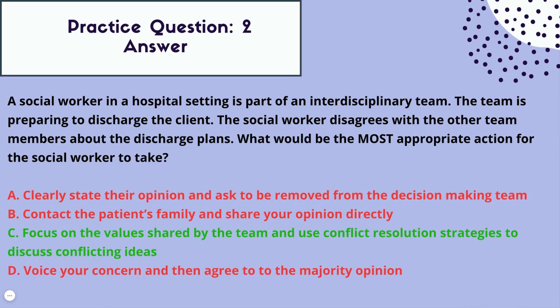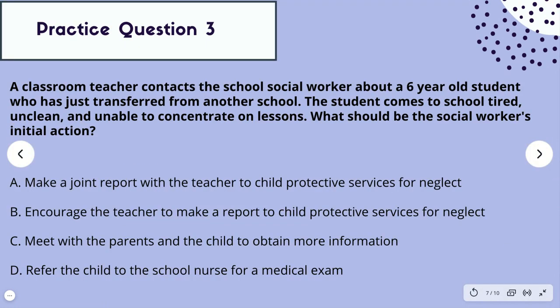We have one more question to cover — question number three. A classroom teacher contacts the school social worker about a six-year-old student who has just transferred from another school. The student comes to school tired, unclean, and unable to concentrate on lessons. What should be the social worker's initial action? Answer choices: A, make a joint report with the teacher to child protective services for neglect. B, encourage the teacher to make a report to child protective services for neglect. C, meet with the parents and the child to obtain more information. Or D, refer the child to the school nurse for a medical exam.